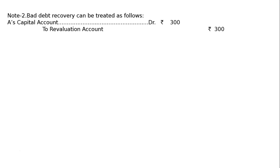Bad debt recovery treatment: A's capital account is debited to revaluation account, because this is a gain for the firm. The entry is: bad debt recovered account debited to A's capital account, and A's capital account debited to revaluation. In the revaluation account credit side, write A's capital account. A's capital account will show 300 in the revaluation column — A took the money that the debtor paid, and now A will reimburse ₹300 to the firm.